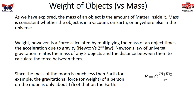On Earth, the two masses are you and the Earth — the huge mass of the Earth and your relatively close radius — which is why there's relatively strong gravity. If you go to the Moon, your mass is the same, but the Moon's mass is much lower, so the gravitational force is less. On the Moon, it's about one-sixth the mass, so it's about one-sixth the weight force.